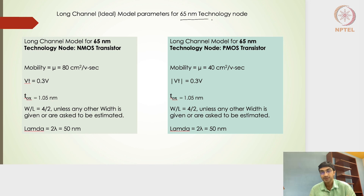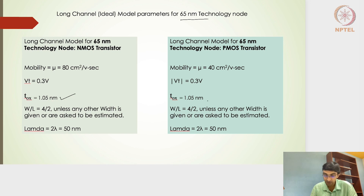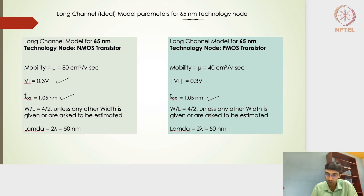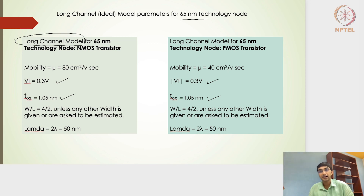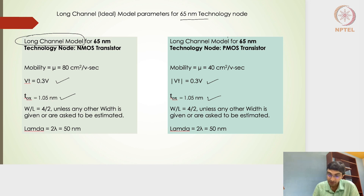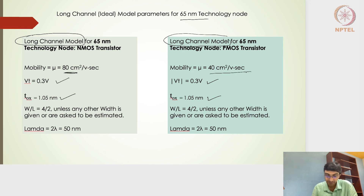Looking at the 65 nanometer technology node: this represents a specific fabrication process with defined parameters. The oxide thickness is 1.05 nanometers for both NMOS and PMOS. The threshold voltage, characterized after the inversion channel forms, is 0.3 volts. The mobility in the long channel model — ignoring short-channel effects — is 80 cm² per volt-second for electrons and 40 cm² per volt-second for holes.